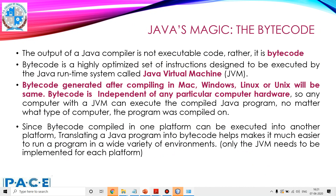Now we'll discuss what is bytecode — it's called Java's magic. The output of a Java compiler is not executable code; rather it is bytecode. Bytecode is a highly optimized set of instructions designed to be executed by the Java runtime system called the Java virtual machine, JVM. Bytecode generated after compiling on Mac, Windows, Linux, or Unix will be the same. Bytecode is independent of any particular computer hardware, so any computer with the JVM can execute the compiled Java program, no matter what type of computer the program was compiled on. Translating a Java program into bytecode makes it much easier to run a program in a wide variety of environments; only the JVM needs to be implemented for each platform.